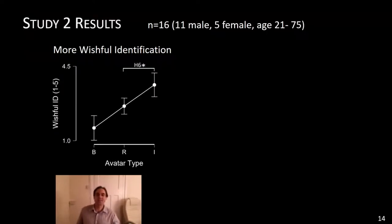First of all, we looked at wishful identification, which is a measure of how much you would like to be your avatar, how much you identify with your avatar in a wishful manner. As you can see here, wishful identification increased significantly from a realistic avatar to the idealized avatar. In other words, the idealized avatar is doing its job. So now the interesting question, how about power? Does it make me faster racing against my own Superman?